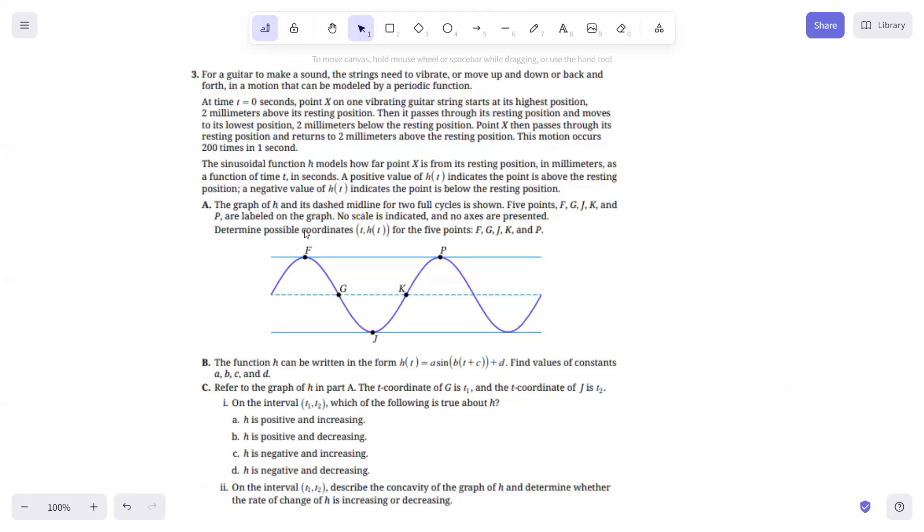Now we're ready to jump into question number three. This deals with a guitar string being plucked and how it vibrates up and down. We have the graph here of the situation. The graph H and its dashed midline for two full cycles is shown. The five points F, G, J, K, and P are labeled on the graph. There's no scale, no axis. We want to determine the possible coordinates for those five points. Since F is the beginning point, and since this is the midline, and we know that the string goes up two millimeters and down two millimeters, then point F is going to be at the beginning, and it's going to be at a height of two.